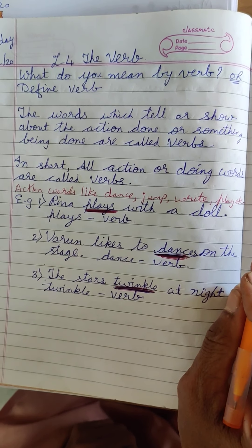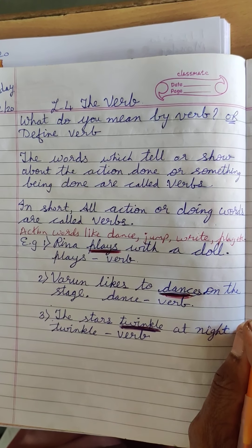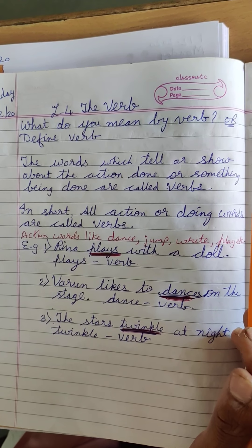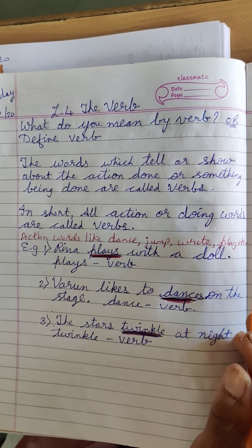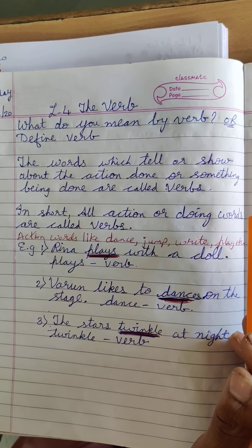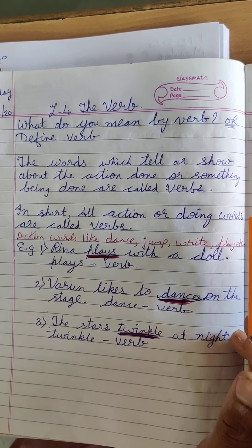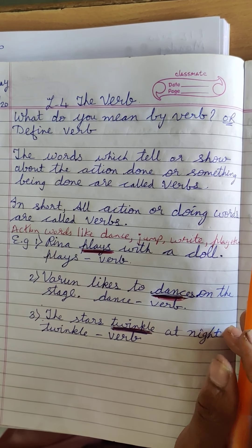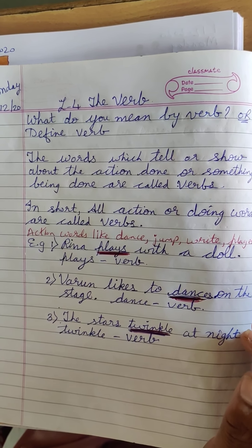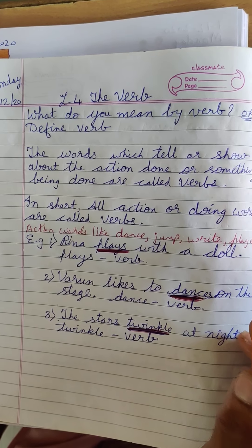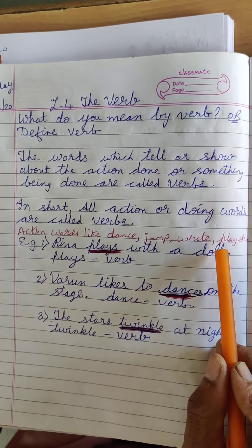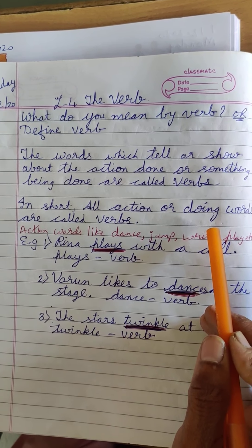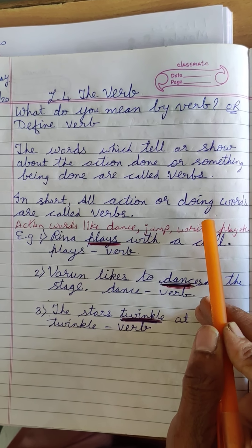Now, everybody wakes up in the morning. First of all, what do we do? We do some exercise like jump, clap, walk, run, scratch, etc. These are the action words. So, all the action words are called verbs.